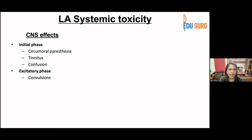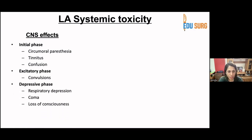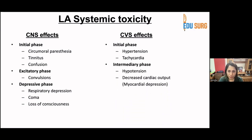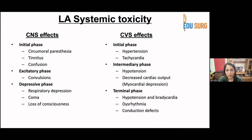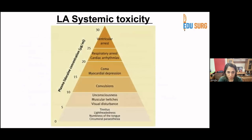In the excitatory phase, convulsions occur. In the depressive phase, respiratory depression, coma, and loss of consciousness follow. Cardiovascular effects begin with hypertension and tachycardia, then the patient becomes hypotensive due to severe myocardial depression, with decreased cardiac output, bradycardia, dysrhythmia, and conduction defects that can progress to cardiac arrest. The progression goes: tinnitus, lightheadedness, perioral numbness, then unconsciousness, muscular twitches, visual disturbances, convulsions, coma, myocardial depression, respiratory arrest, cardiac arrhythmias, and finally ventricular arrest.